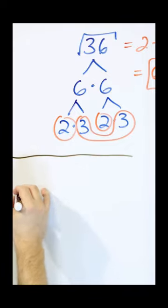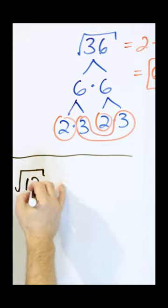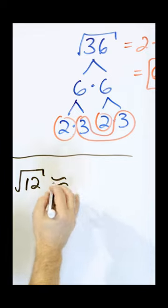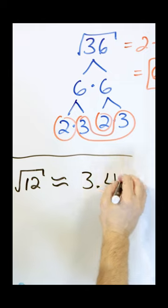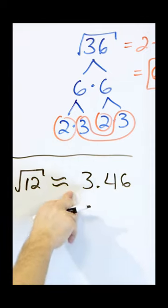If you go into a calculator and take the square root of 12, it's going to give you an answer of approximately 3.46. The reason I have the squiggly lines here is because this means approximately equal to.